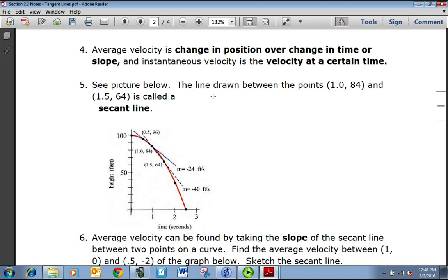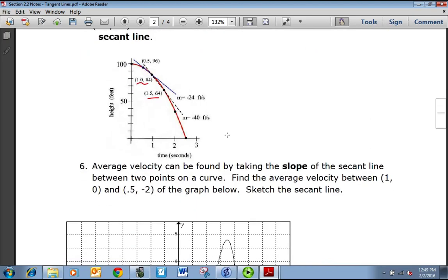In this picture, we have a line drawn between points 1.084 and the point 1.564. So here are the two points, and we've got a line drawn through them. Now we can't talk about slope of a curve, right? We can only talk about slope of a straight line. But if we drew a straight line between two points on a curve, we can approximate the slope or the rate of change. These lines that we draw on the curve are called secant lines.